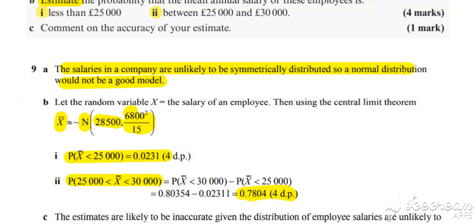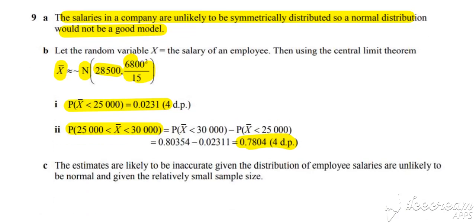And then comment on the accuracy of your estimate. So this is where the central limit theorem idea of having a large sample is required. So the estimates are likely to be inaccurate, given the distribution of employees salaries are unlikely to be normal and given the relatively small sample size.